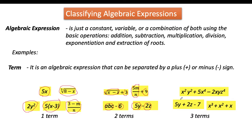For three-term expressions: 5y, 2z, and 7 are three different terms, so 5y plus 2z minus 7 is an algebraic expression with three terms. Similarly, x cubed plus x squared plus x has three separate terms: x cubed, x squared, and x. And x squared y squared plus 5x to the fourth minus 2xyz to the fourth power also has three terms: x squared y squared is one term, 5x to the fourth is another, and 2xyz to the fourth power is the third.